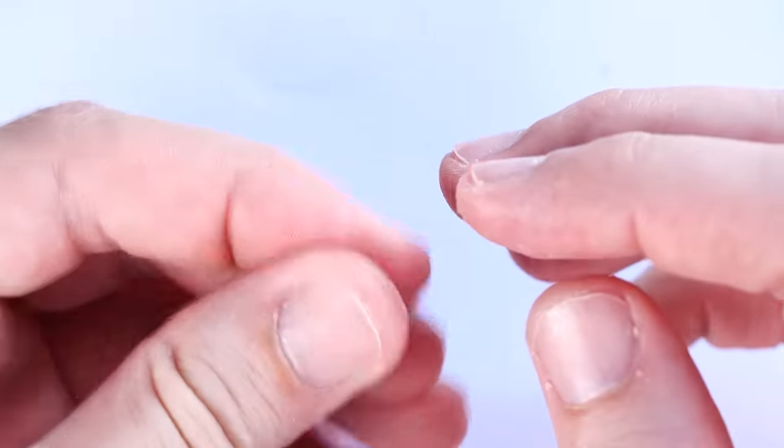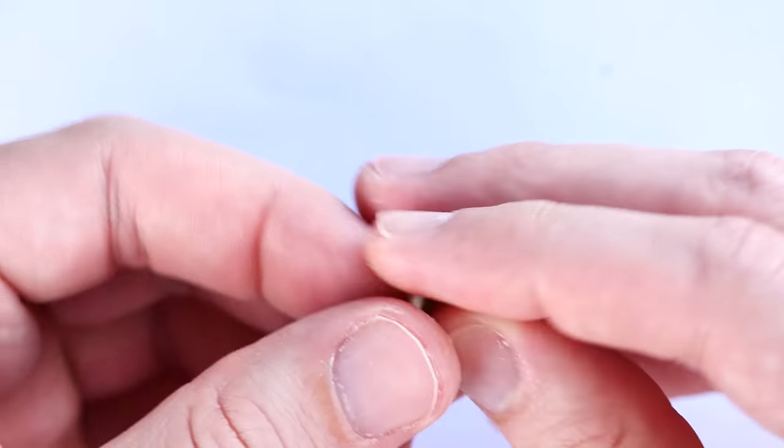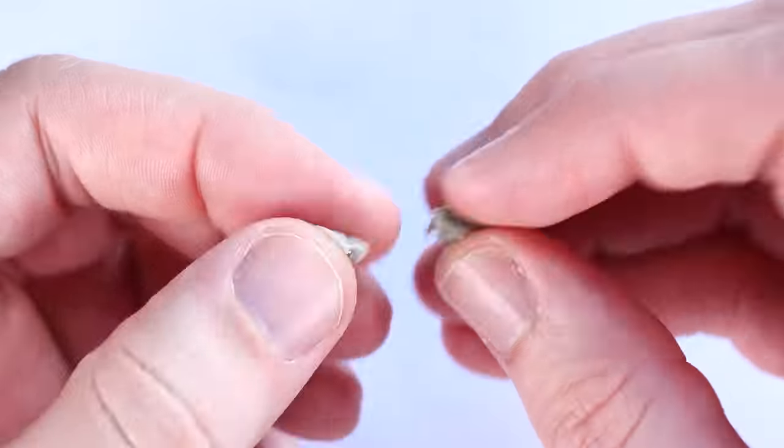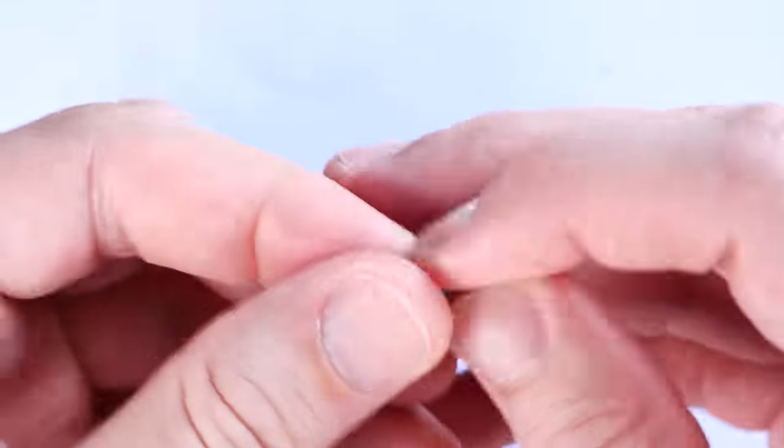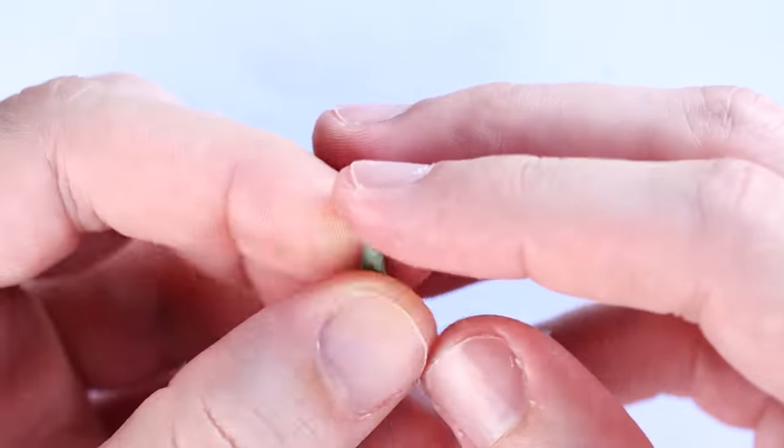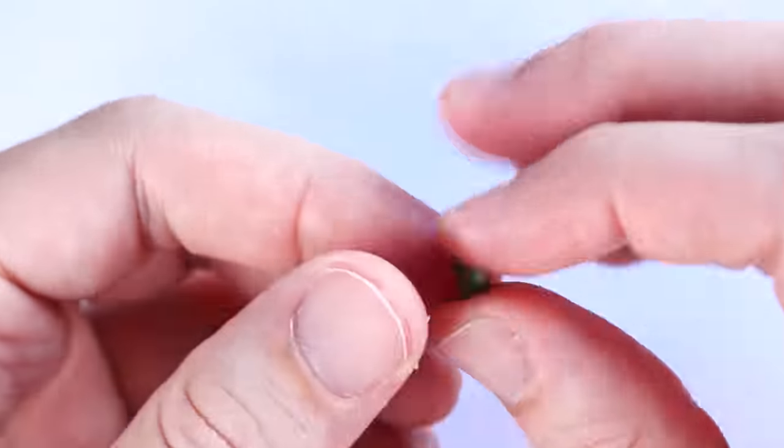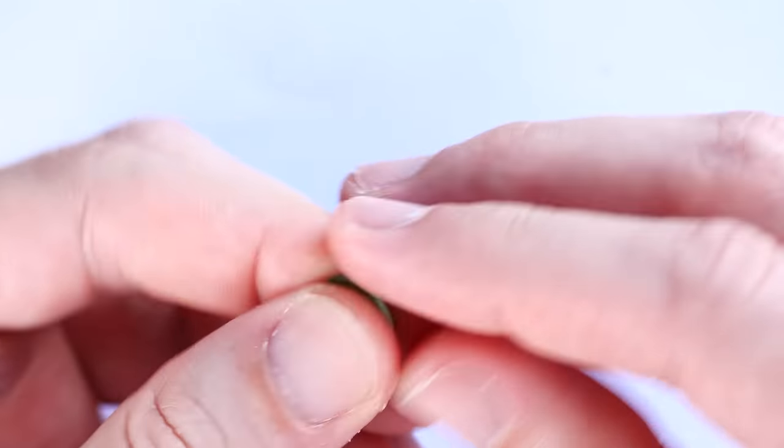So if you just used green stuff, it wouldn't sand as well, but if you just used epoxy sculpt, there's a high probability it wouldn't actually stick to the model and flake off too. So by mixing them together, I get the best features of both putties without sacrificing on either of them.